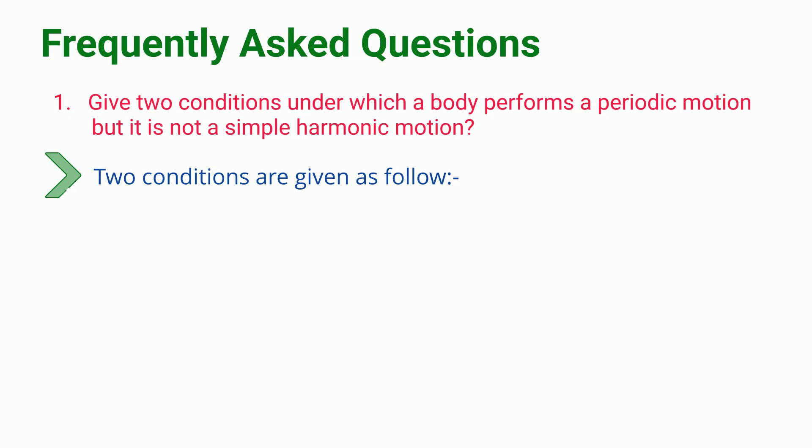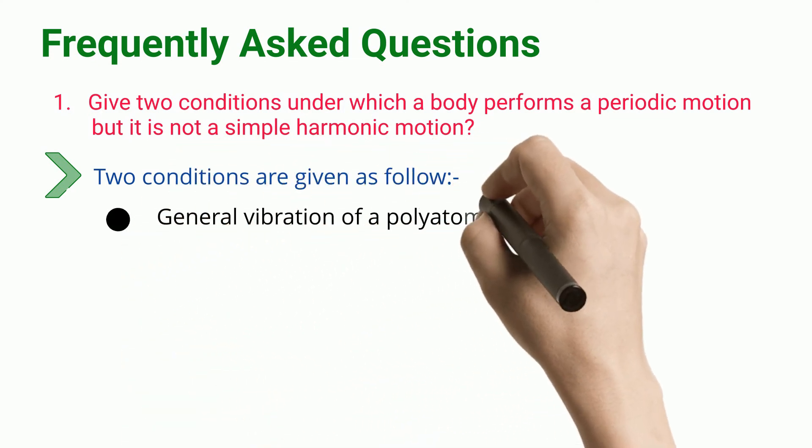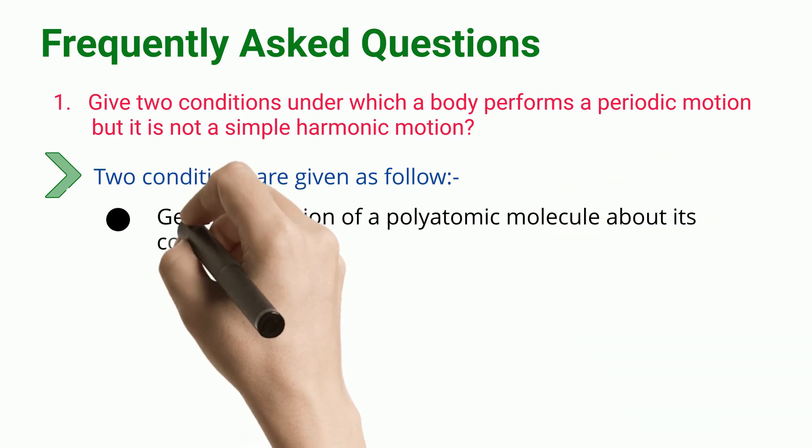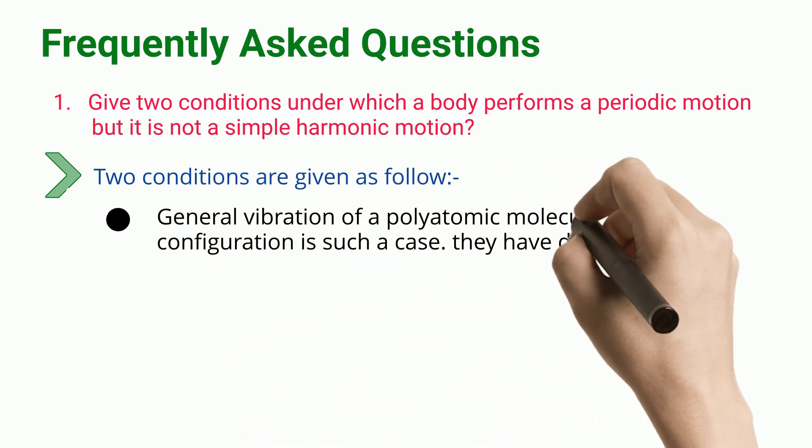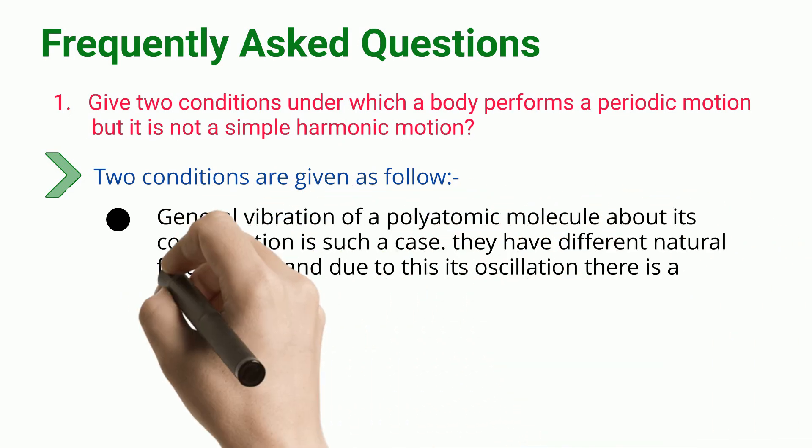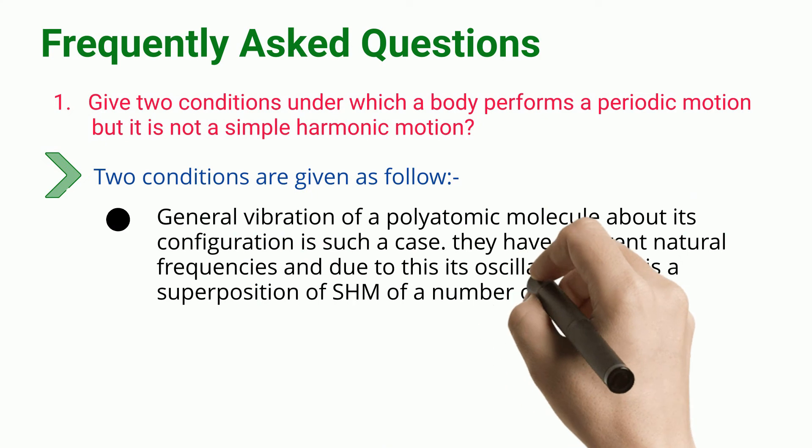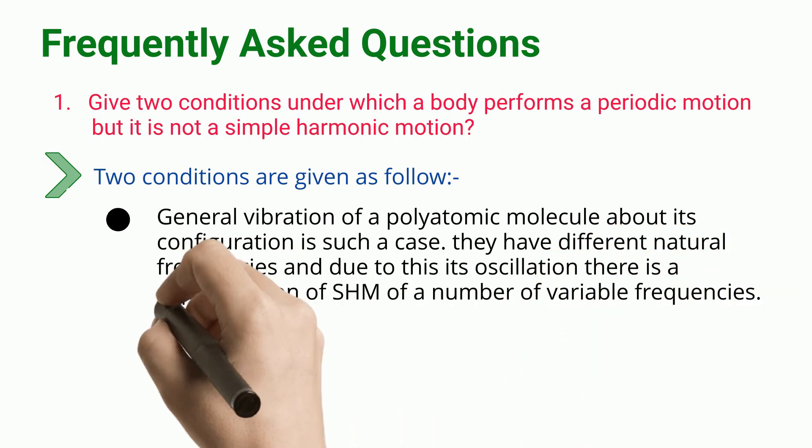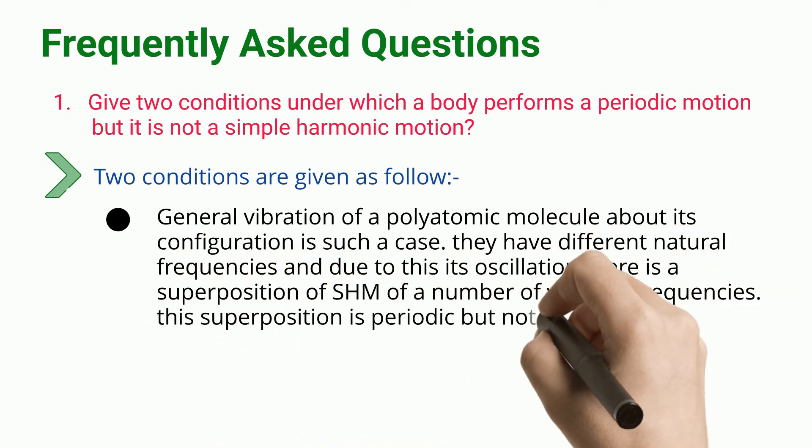Two conditions are given as follows. General vibration of a polyatomic molecule about its configuration is such a case. They have different natural frequencies and due to this its oscillation, there is a superposition of SHM of a number of variable frequencies. This superposition is periodic, but not SHM.